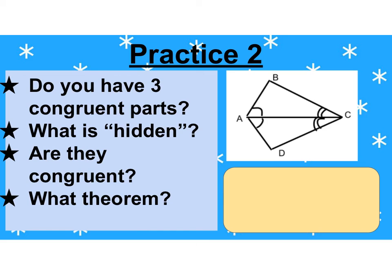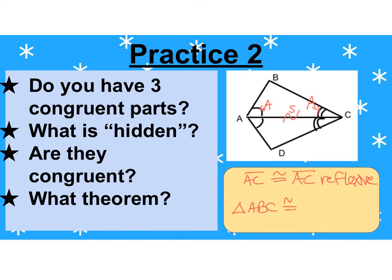Let's look at this one. Do we have three congruent parts? I have the angle with one mark — those are congruent. I have the two marks on the sides. And then I have the piece in the middle. I won't do the entire proof, but we have angle, side, angle. I can say AC is congruent to AC because of the reflexive property. And then triangle ABC is congruent to triangle ADC because of angle-side-angle.